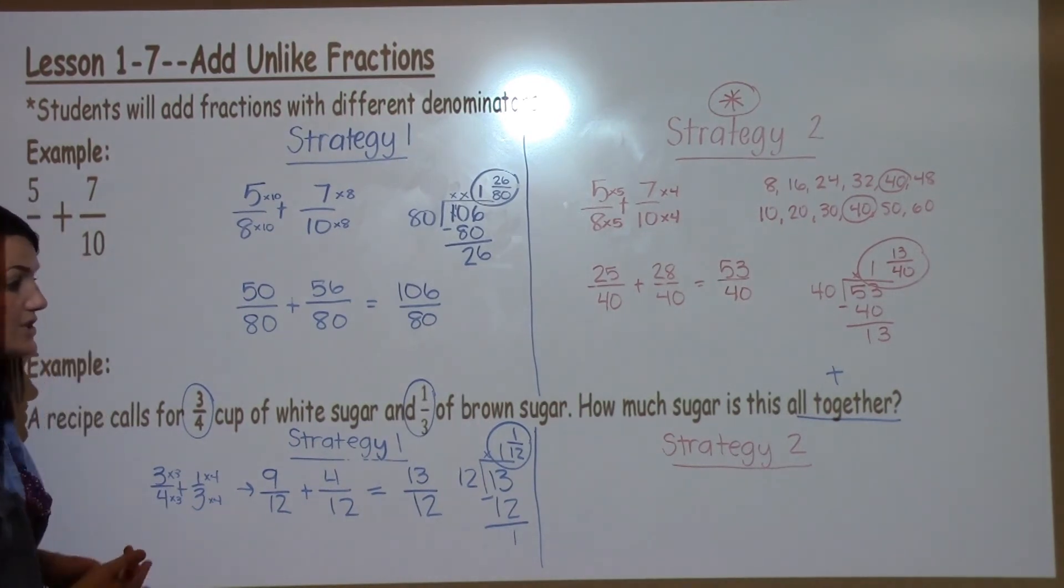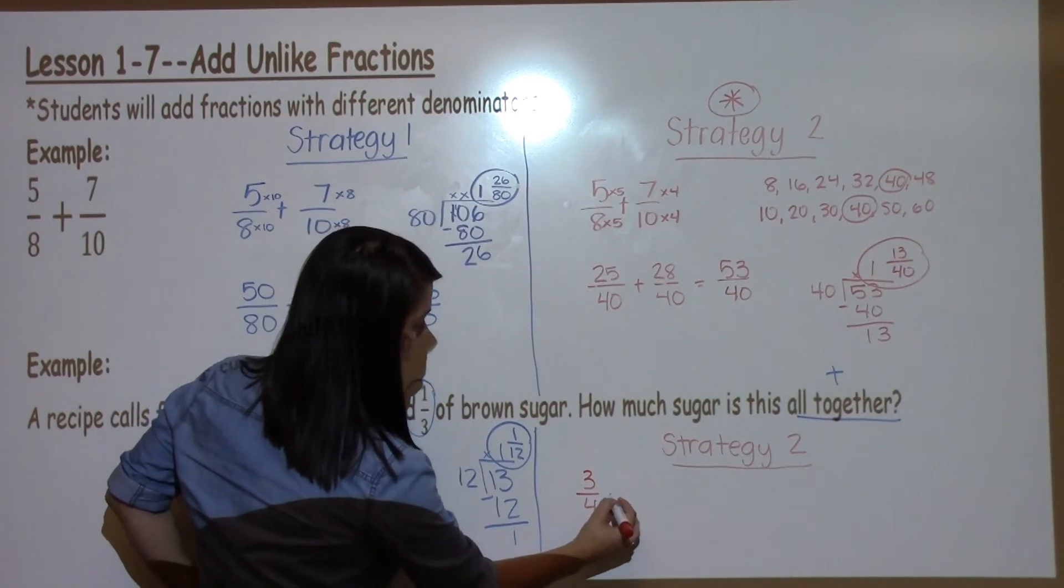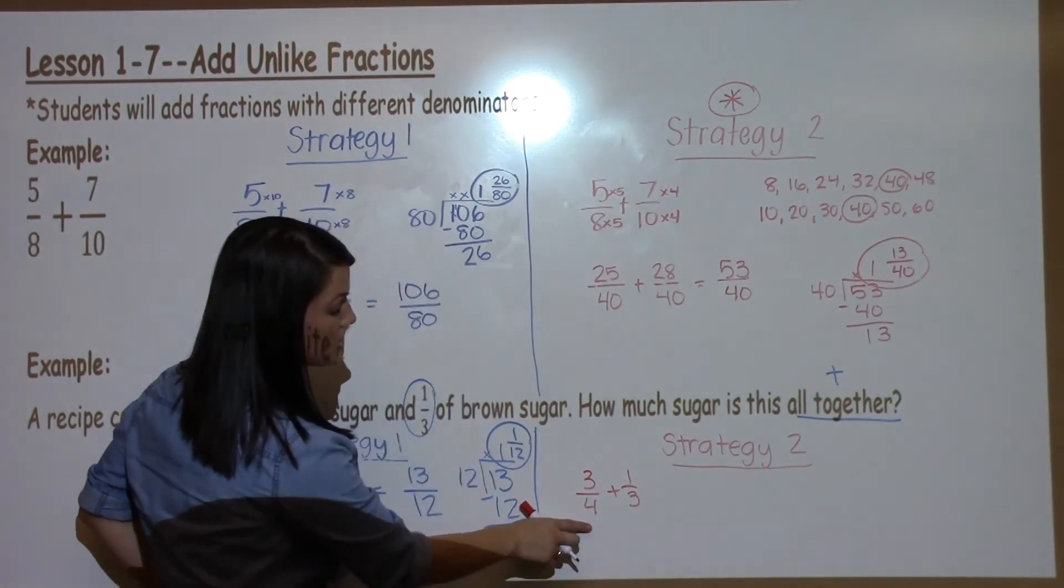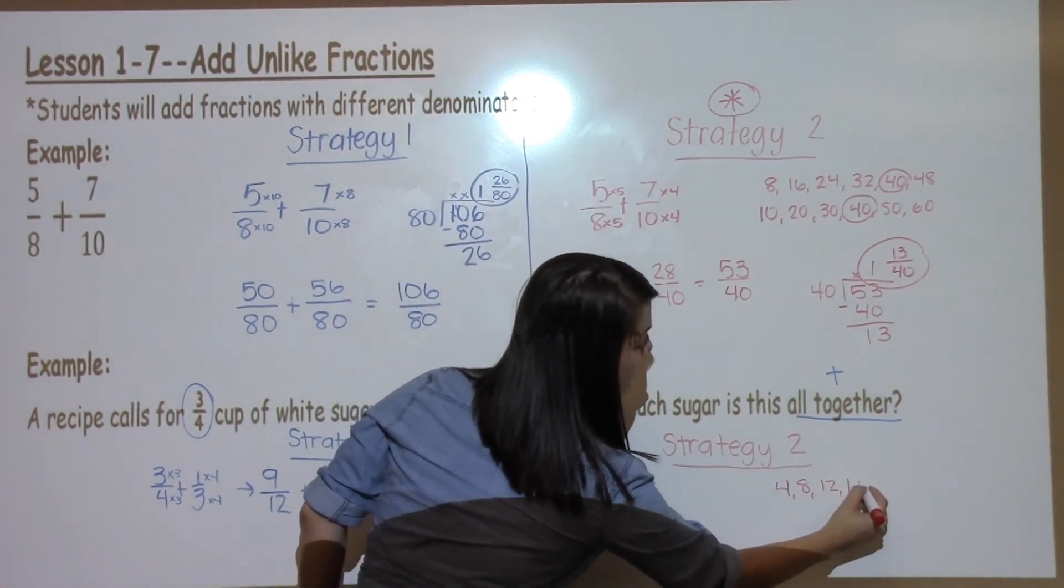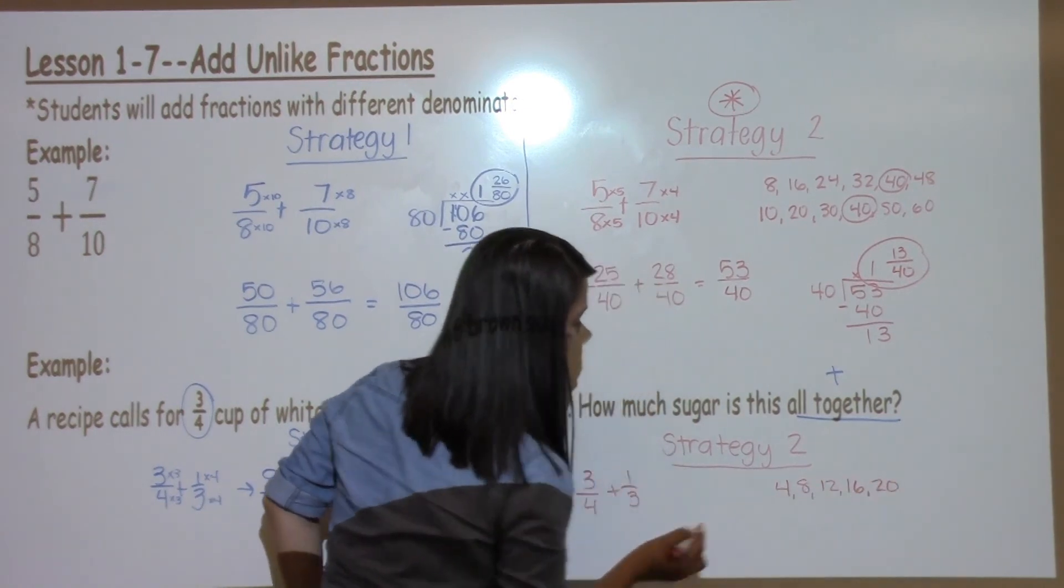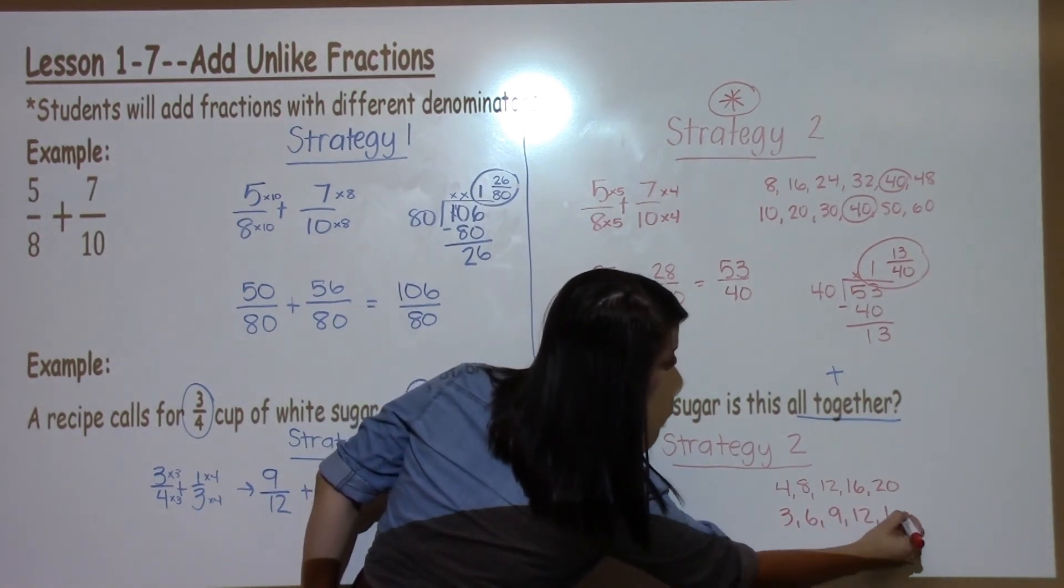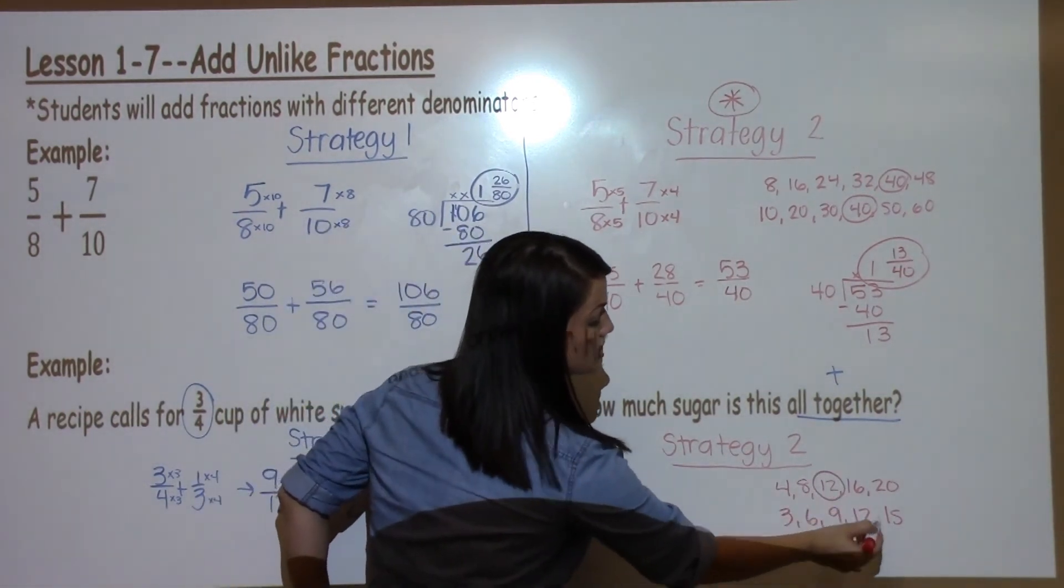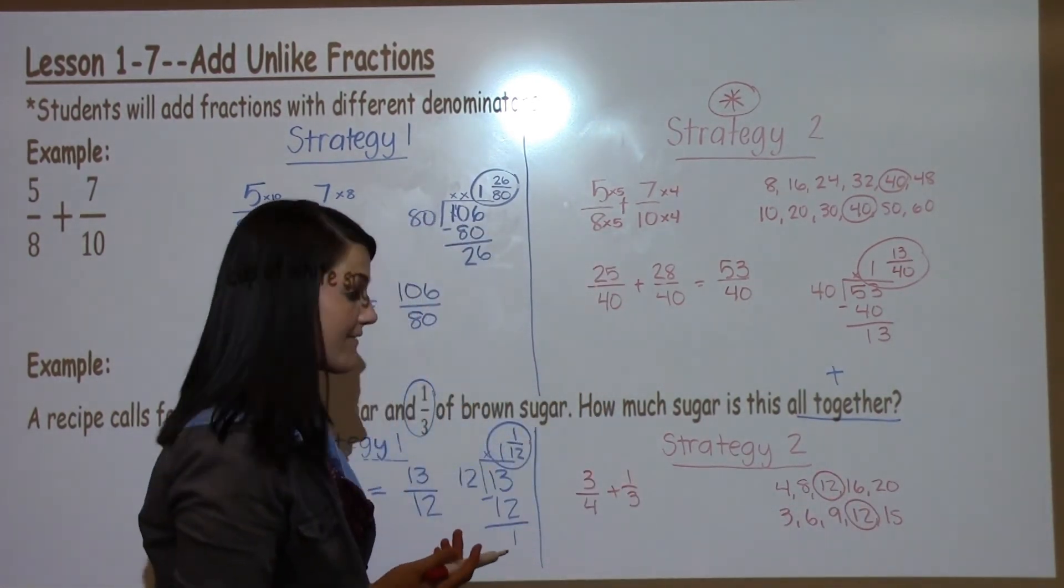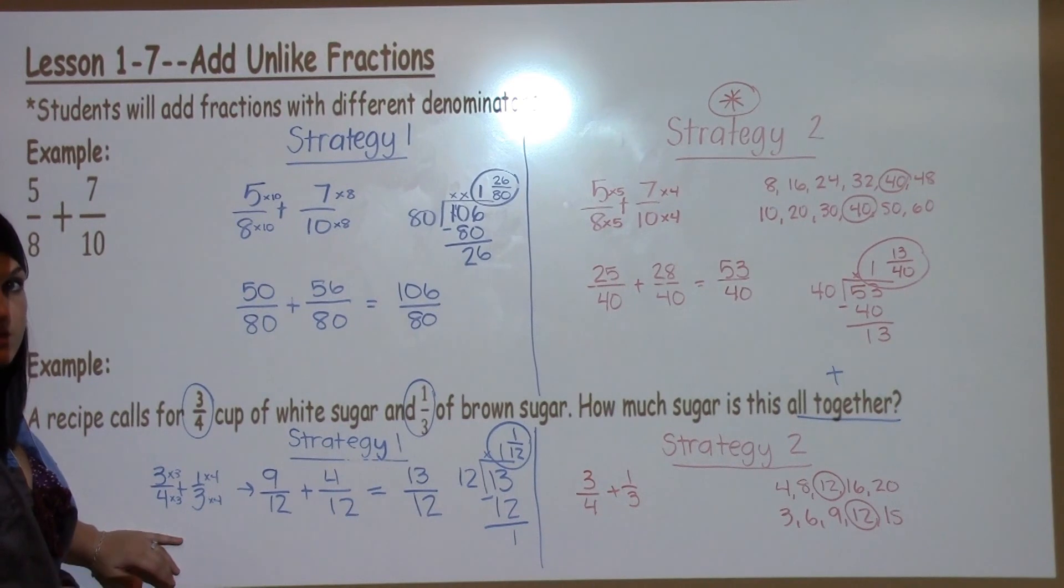For this problem, strategy 2 is going to be very similar, but I'm going to show it to you as well. When I take 3/4 plus 1/3 with strategy 2, I'm going to count by 4s and list out my multiples: 4, 8, 12, 16, 20. And, then I'm going to count by 3s: 3, 6, 9, 12, 15. I'm going to look for the number that they have in common, which it just so happens, in this case, the smallest number that they have in common is 12. So, then I would follow the same steps as strategy 1 to solve my problem.